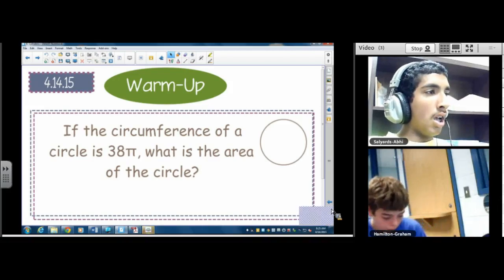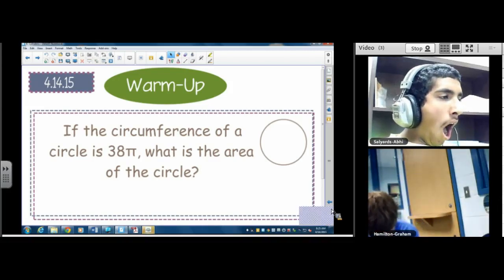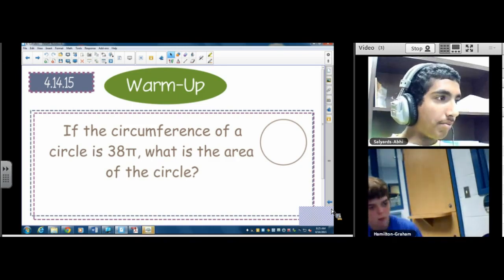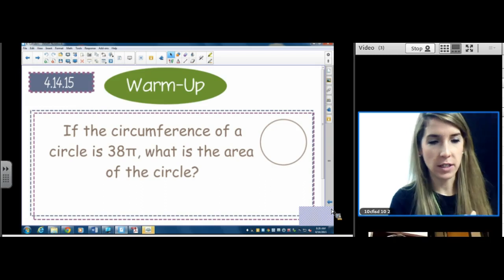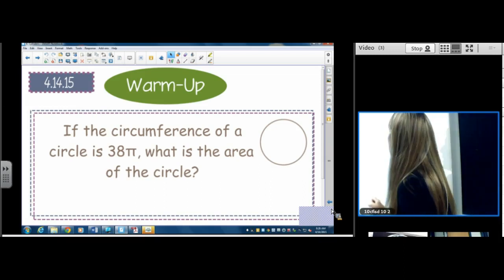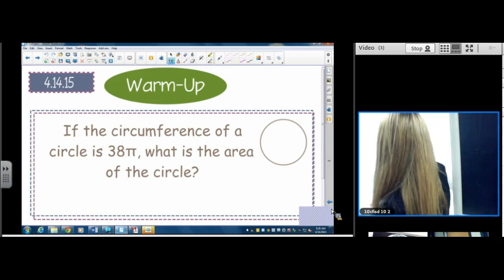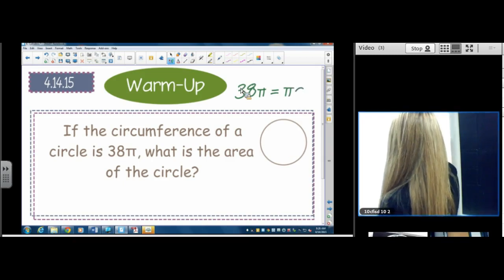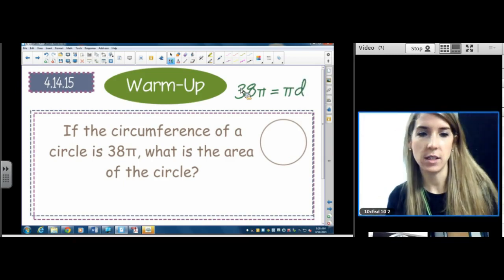So today we are going to do cylinders. We know that cylinders are made up of circles, so that's why our warm-up involves a circle. If the circumference of a circle is 38π, what is the area of the circle? Really basic, just a reminder. I think there was one like this on your test actually. So 38π equals, you can use either circumference formula,